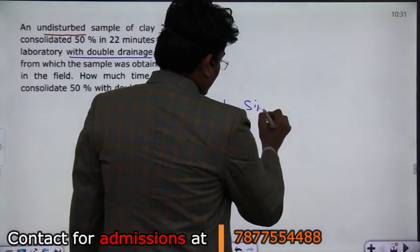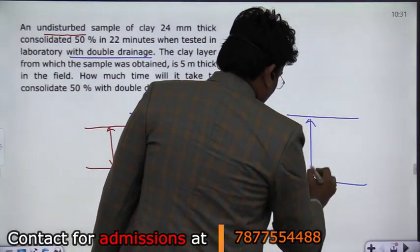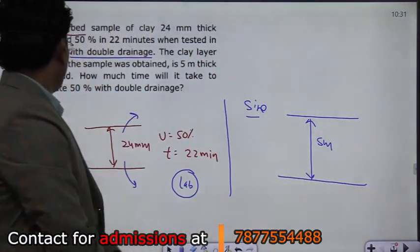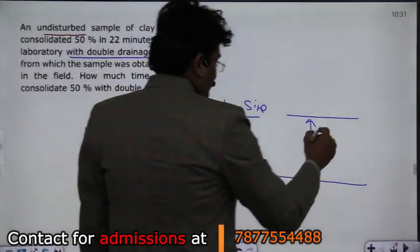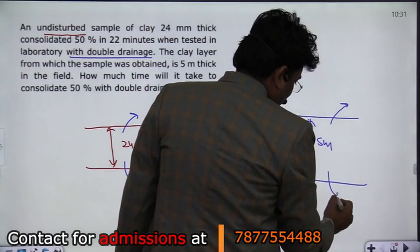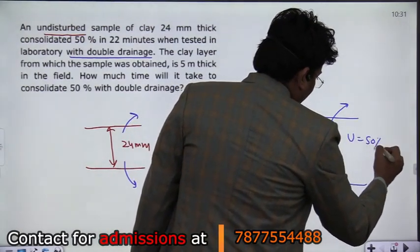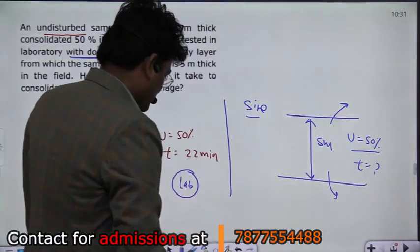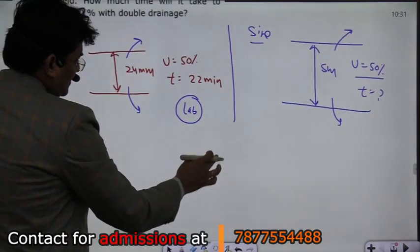If you talk about the site, then basically the clay layer you have at the site, it is given that this is 5 meter thick. This is 5 meter thick in the field. How much time will it take to consolidate 50% with double drainage? Here also the condition is double drainage - water is coming out from below and from above, and the degree of consolidation is 50%, and you are asked to tell how much time in the field of 5 meters the consolidation 50% is achieved.